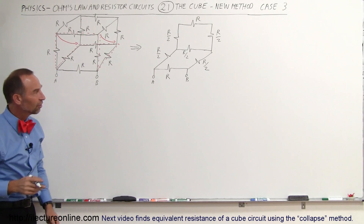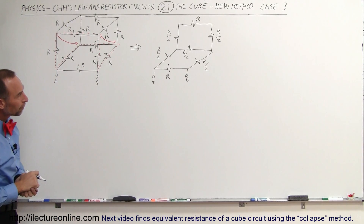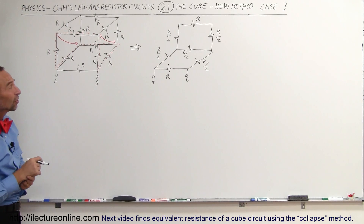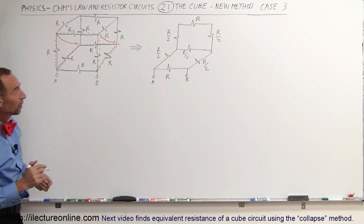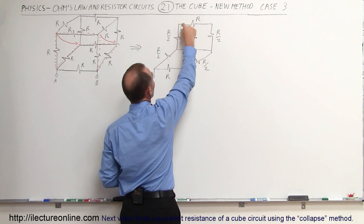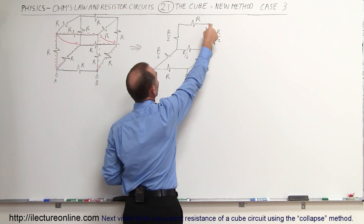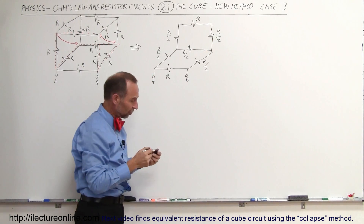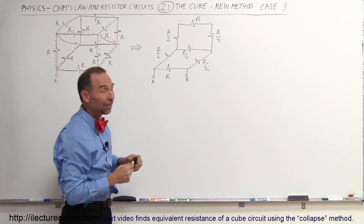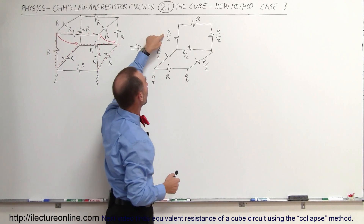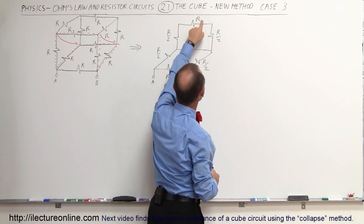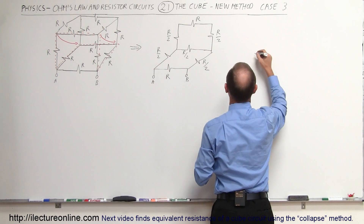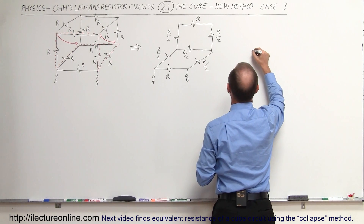So that's our equivalent collapsed circuit. Notice that in the back we have three resistors in a single series path, so we simply add them together: R/2 plus R/2 plus R. Adding those together gives 2R. So that back resistor path has an equivalent resistance of 2R.